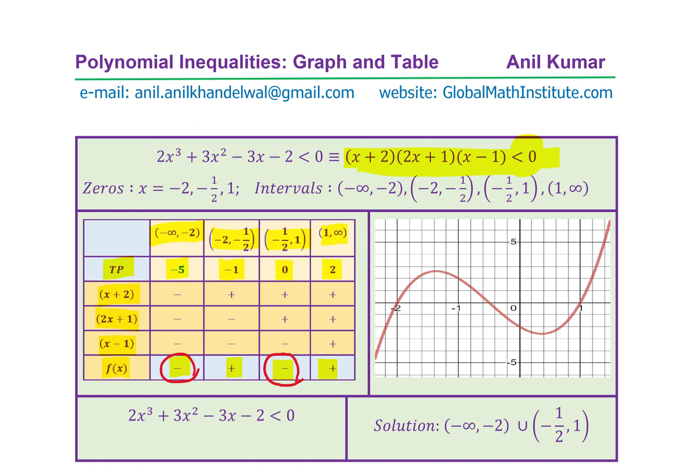So those are the two intervals where the polynomial inequality is true. And therefore, we can write down a solution as from -∞ to -2, union -1/2 to 1. Is that clear to you? That is how we do it.